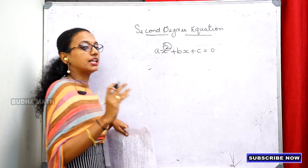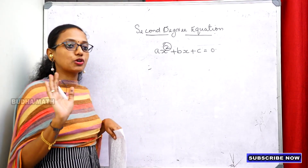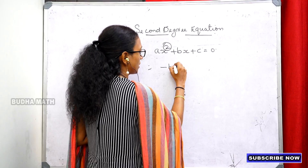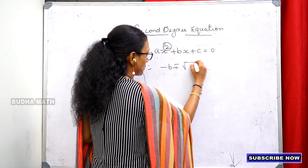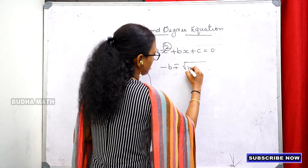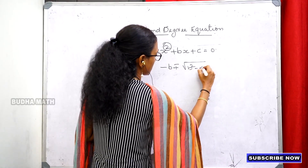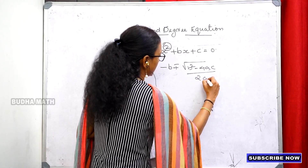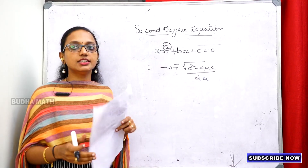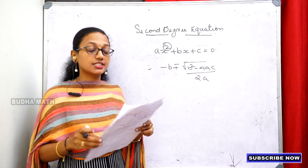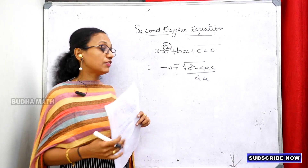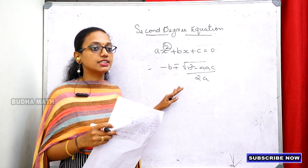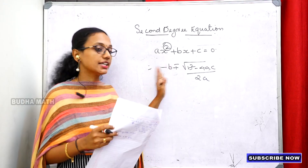Let's change to the formula: x equals minus b plus or minus root of b squared minus 4ac, all divided by 2a. This is the formula we use to find the value of x in the second degree equation.